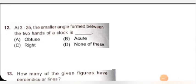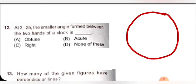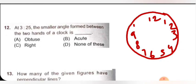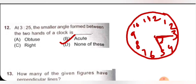Next question: at 3:25, the smaller angle formed between the two hands of the clock is — let's draw a watch: 12, 6, 3, 9, 1, 2, 3, 4, 5, 7, 8, 10, 11. According to the question, at 3:25, the hour hand will be near 3 and the minute hand will be at 5. You can observe that this angle is less than 90 degree, meaning the two hands form an acute angle between 3 and 5. Option B is correct.